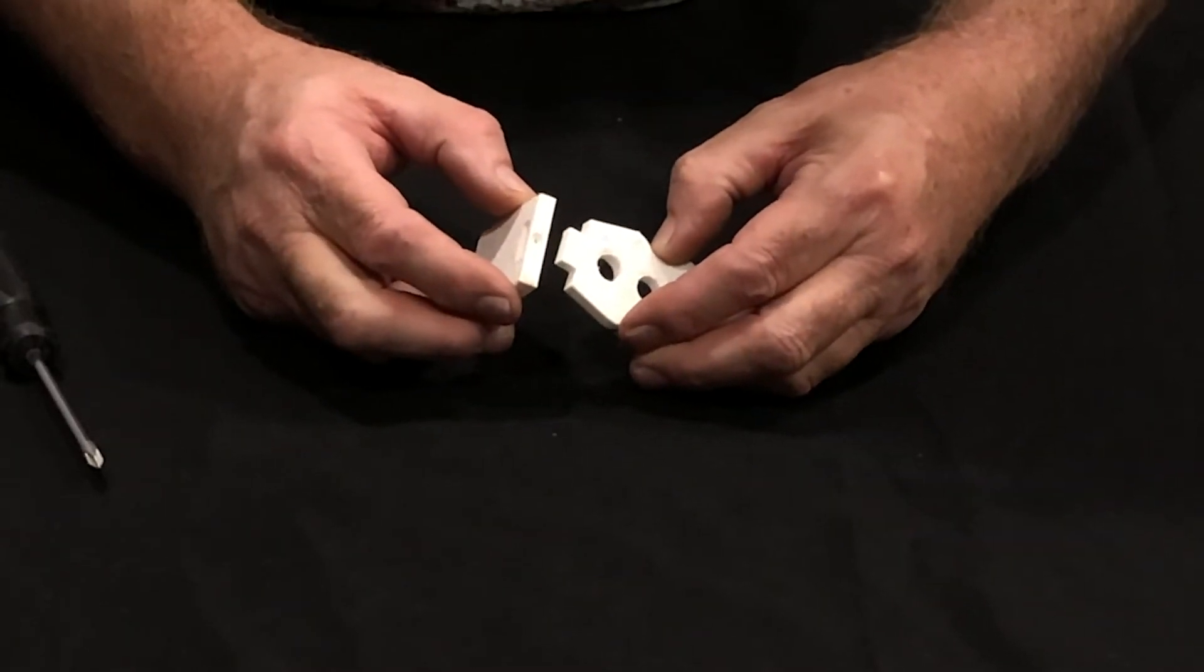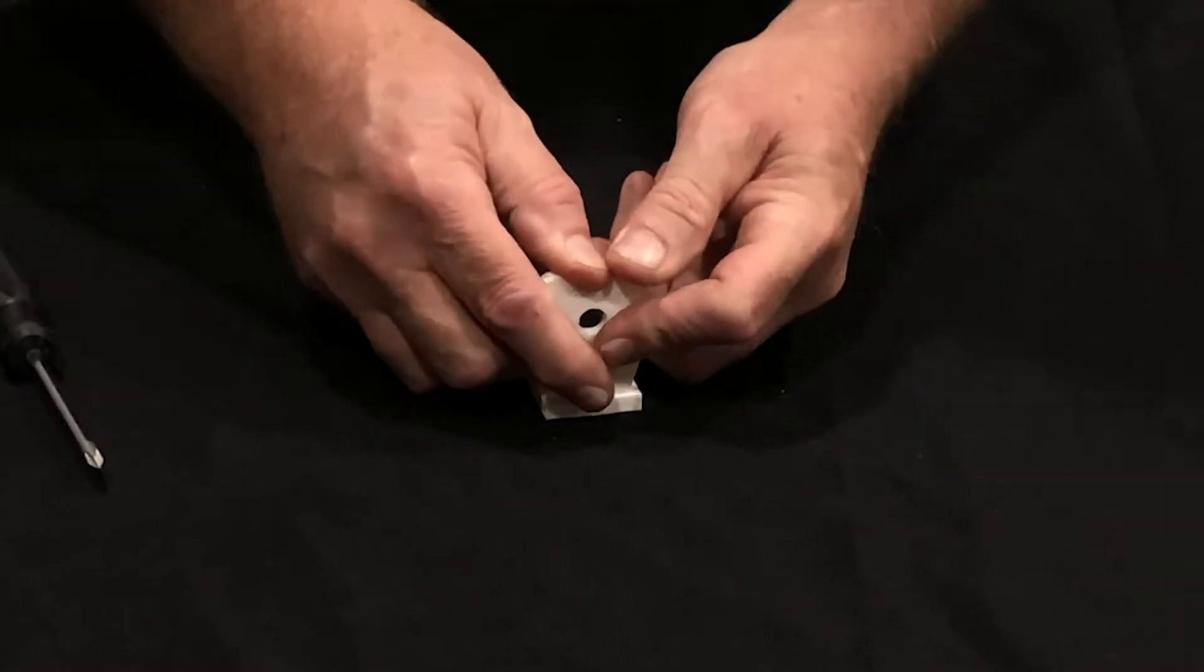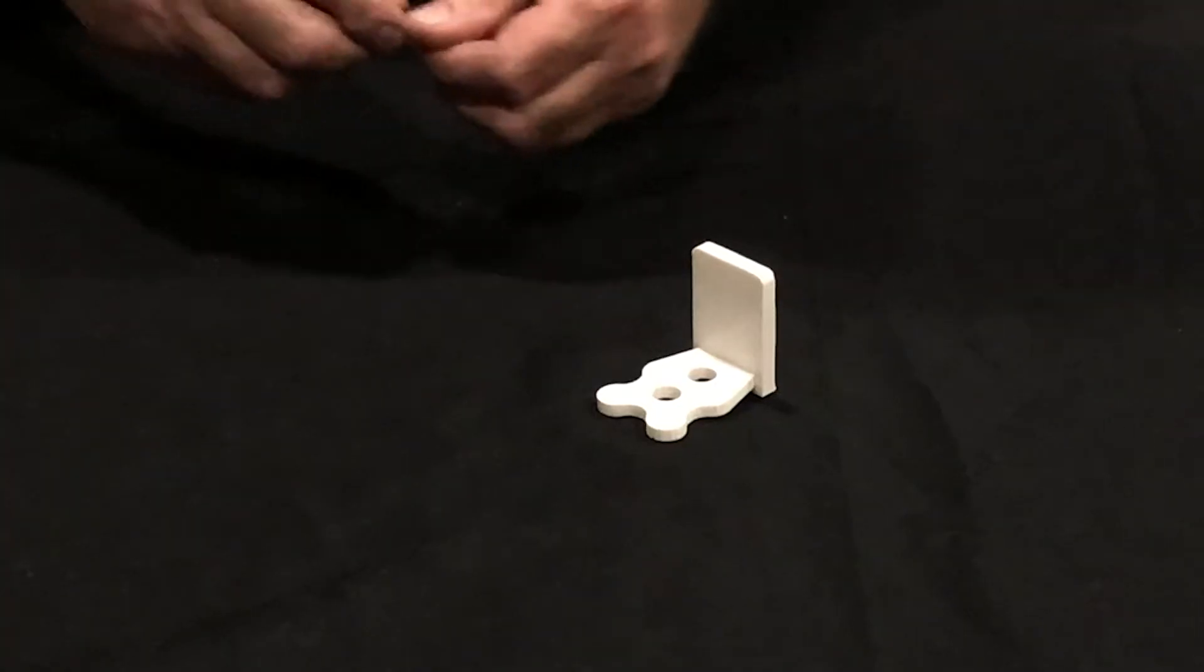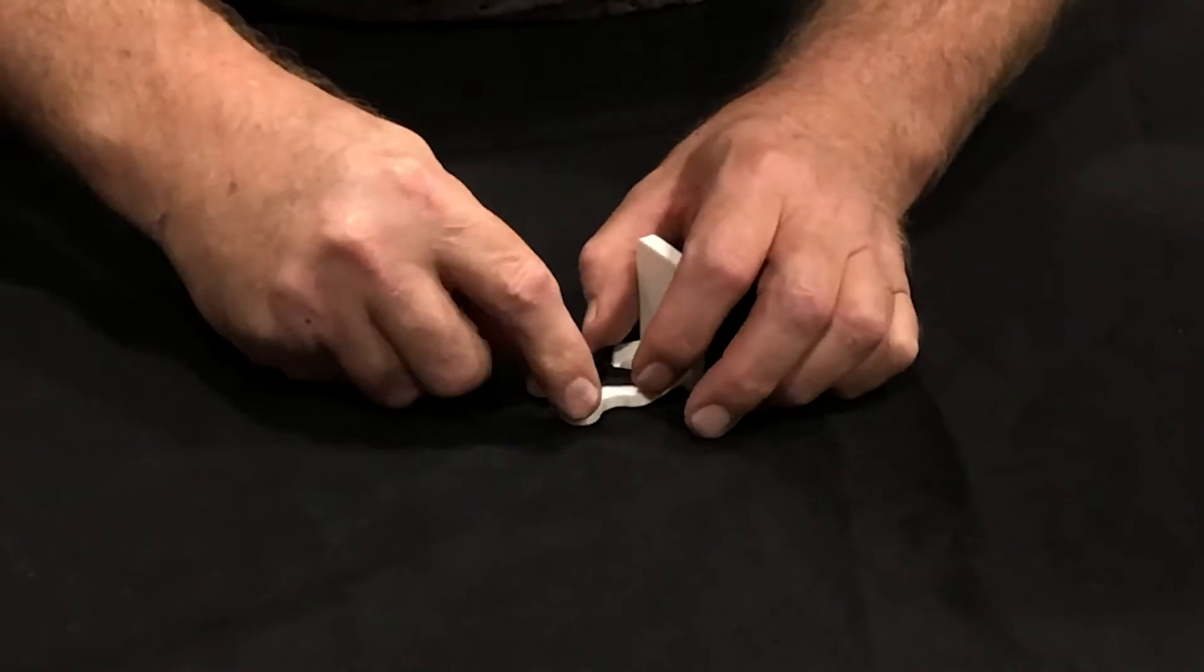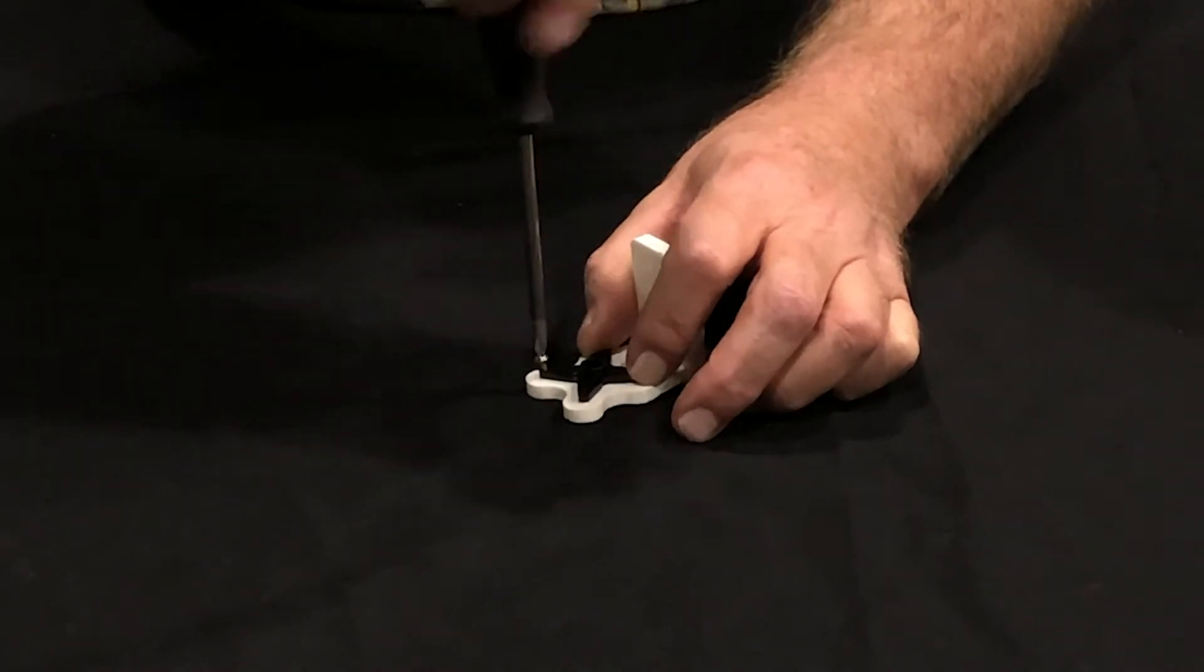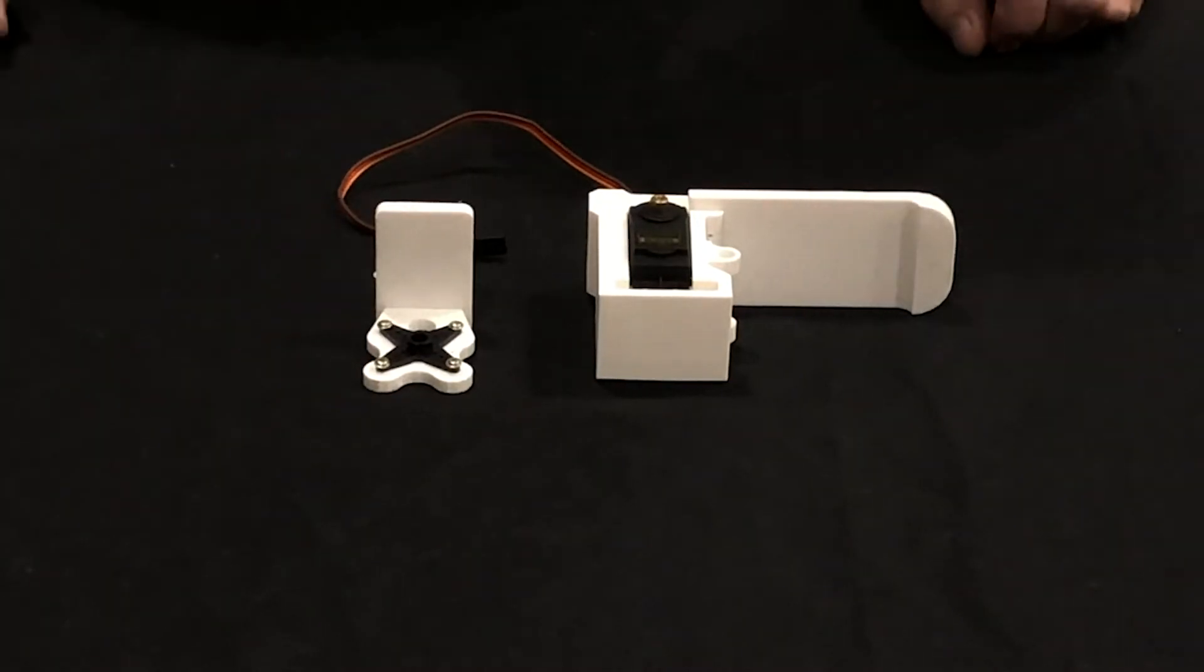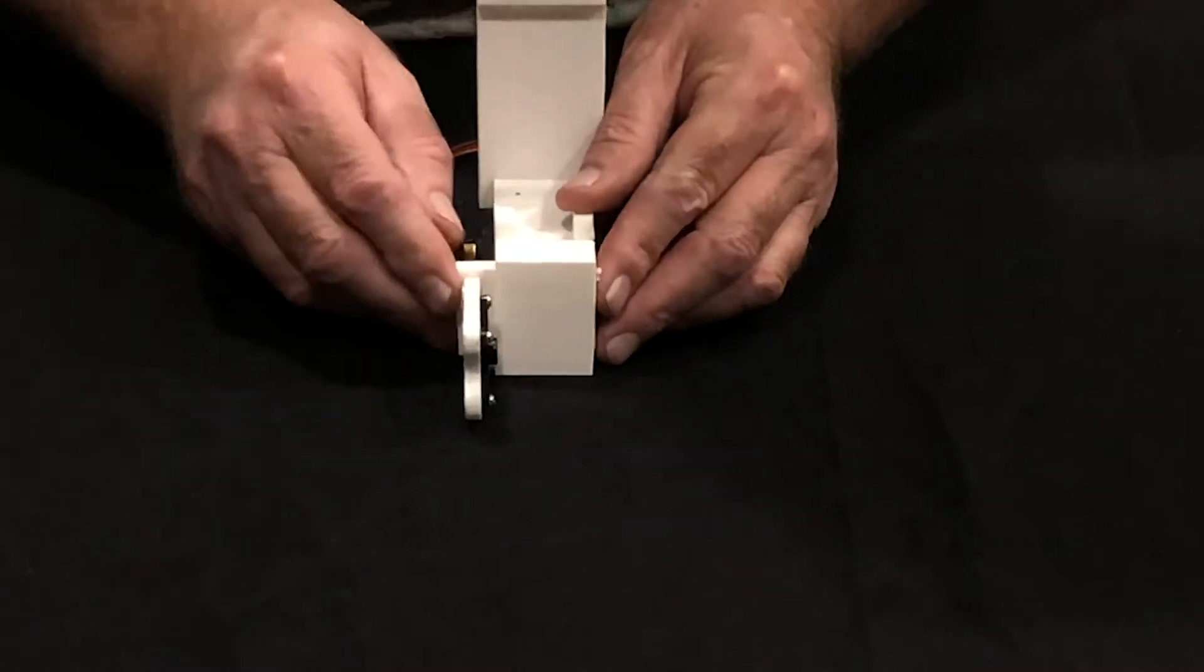Once that's done, we'll begin to assemble the link adapter. Click the two pieces into place and then use one of screw D. Screw that into place, and then we'll begin to mount the servo horn onto the adapter. You'll use four of screw B. And then once that's set, we can take the link adapter, slide that into the jaw assembly, and screw that into place with screw D.